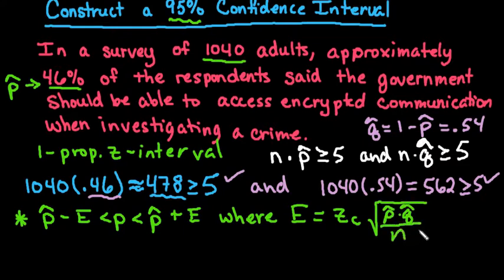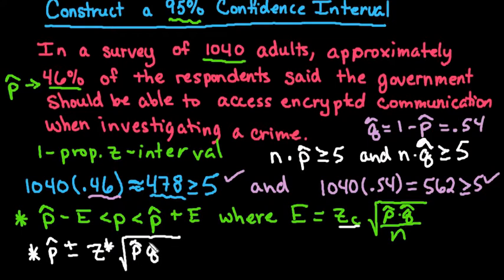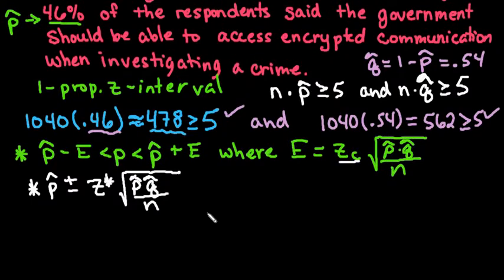The other textbook I've taught from used the formula p-hat plus or minus z-star, where z-star is the same thing as z_c - the critical value that corresponds to that level of confidence, times the square root of p-hat q-hat divided by n. This condenses it and shows all the work in a much smaller step. This is the formula I'm going to use to show the calculations. We already discussed that p-hat is 0.46.